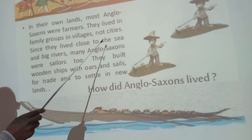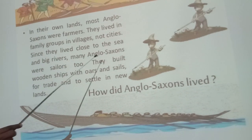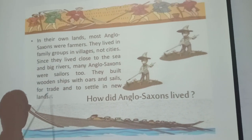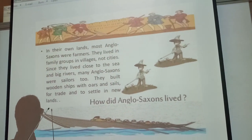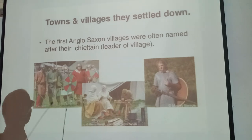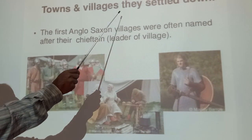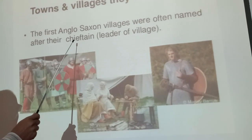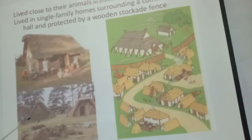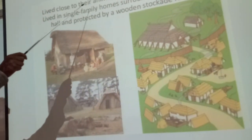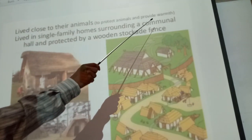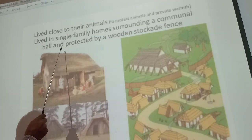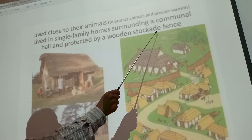Since they lived close to the sea and big rivers, many Anglo-Saxons were sailors too. They built wooden ships with oars and sails for trade and to settle in new lands. The first Anglo-Saxon villages were often named after their chieftain or leader. They lived close to their animals to provide protection and warmth, living in single family homes surrounding a communal hall, protected by a wooden stockade fence.